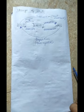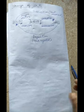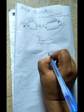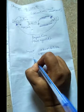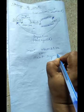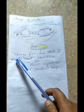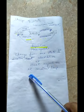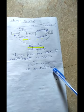Let's discuss change of state. It is a process of change from one state to another state, either by absorption or by rejecting heat at a constant temperature. The word 'constant temperature' is very important here.